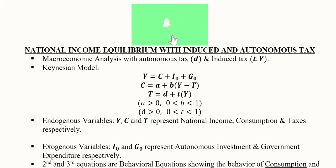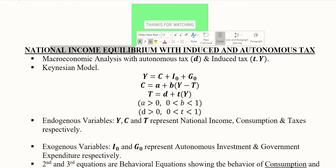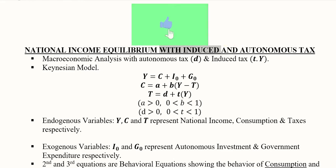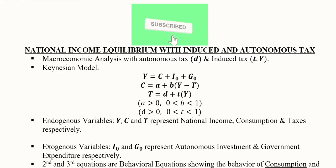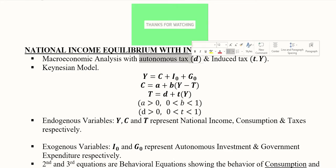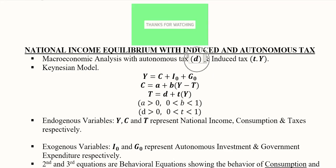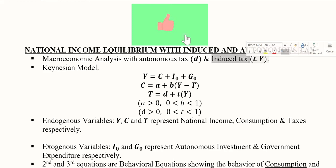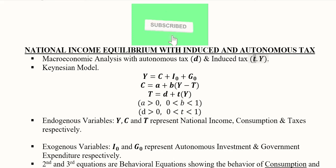In this video we will extend our national income equilibrium analysis to a case where we consider that tax is both induced and autonomous. Autonomous tax is represented by small t, and induced tax is represented by the product of the tax rate and the level of national income.